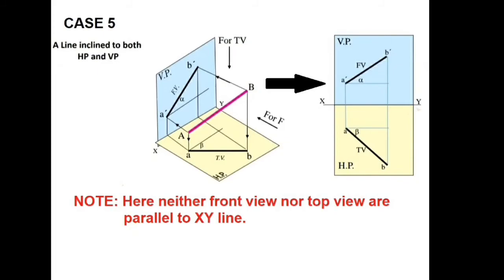In the forthcoming lectures, we will take up examples on these lines, focusing mainly on case five type of problems — where given the apparent length, we need to obtain the true length, and given the true length, we need to obtain the apparent length. We shall see the procedure in the next lectures on projection of straight lines.